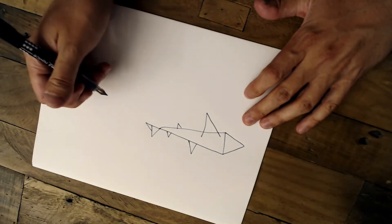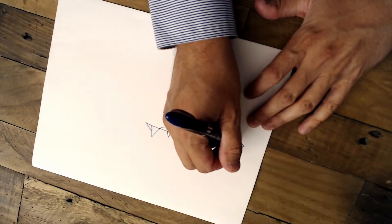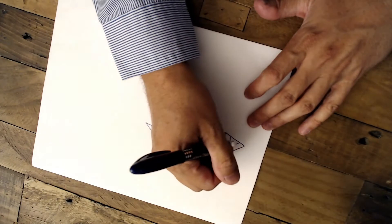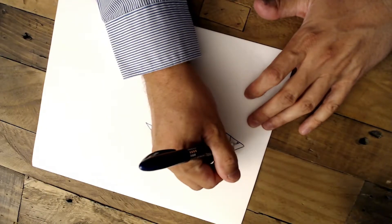Next we're going to create his mouth. So we're going to create another triangle here in his head. And with his teeth, we're going to make small triangles like so.